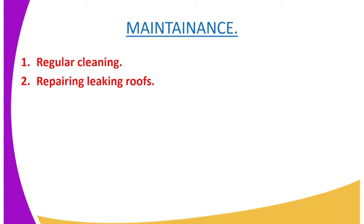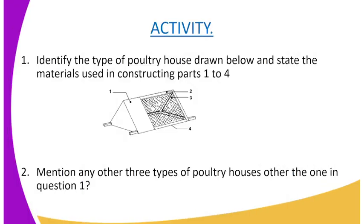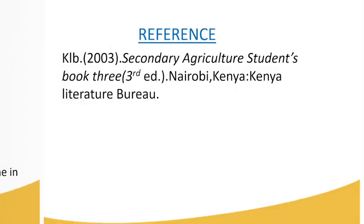As we have come to the end of today's lesson, the activity for today: number one, identify the type of poultry house shown and state the materials used to construct it. Number two, mention any other three types of poultry houses other than the one in question number one. For reference, you can refer to the KLB Secondary Agriculture Student Book 3, published by the Kenya Literature Bureau.